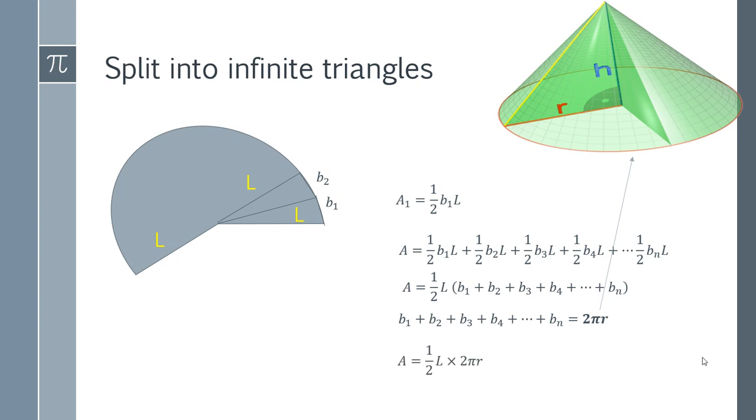So we can think of it as a half L times 2π r. We've replaced that series with 2π r. And you can see that the half and the two are going to cancel together. And so therefore, the area of this section is π r L.